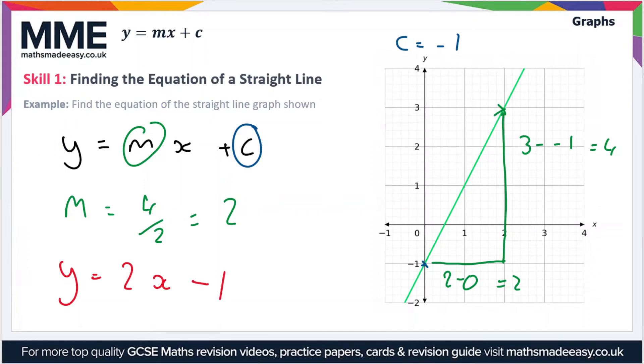So anytime you see a graph that has an equation in the form y equals mx plus c it's guaranteed to be a straight line. Now if you're unsure about calculating gradients we do have a separate video on that so you can go and check that out as well.